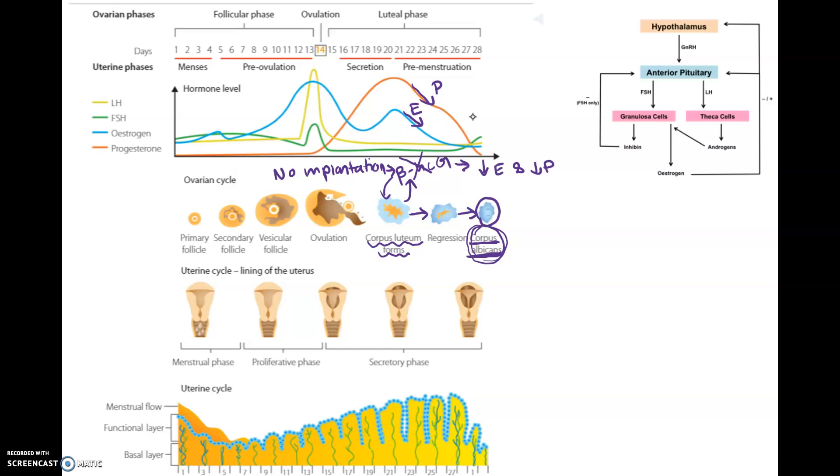Can you see the drop in progesterone and the drop in estrogen here? This is because no implantation occurred. It is the drop in estrogen and progesterone which will decrease the uterine lining and eventually cause bleeding. Day one of menstruation will mark the next menstrual cycle.